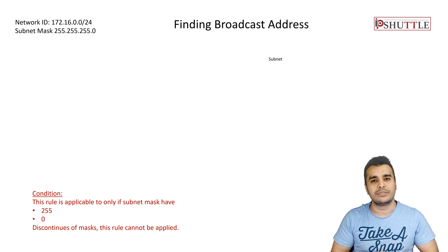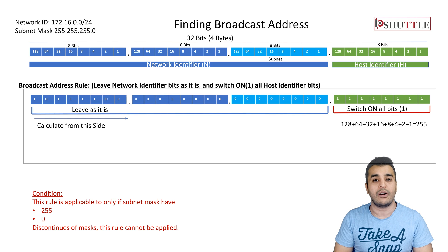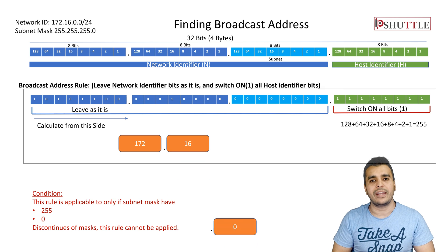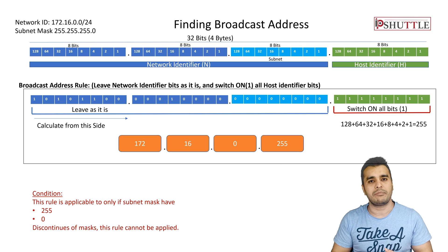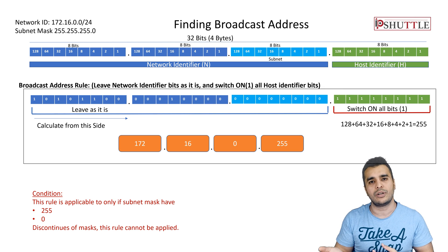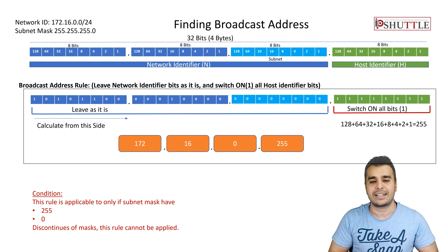For the broadcast address, we switch on all bits of the host identifier. This procedure works fine when the subnet mask is 255.255.255.0, but if you have a variation such as 255.248.0.0 — where any octet has a value other than 255 or 0 — the procedure changes. We will look at that in the next example.